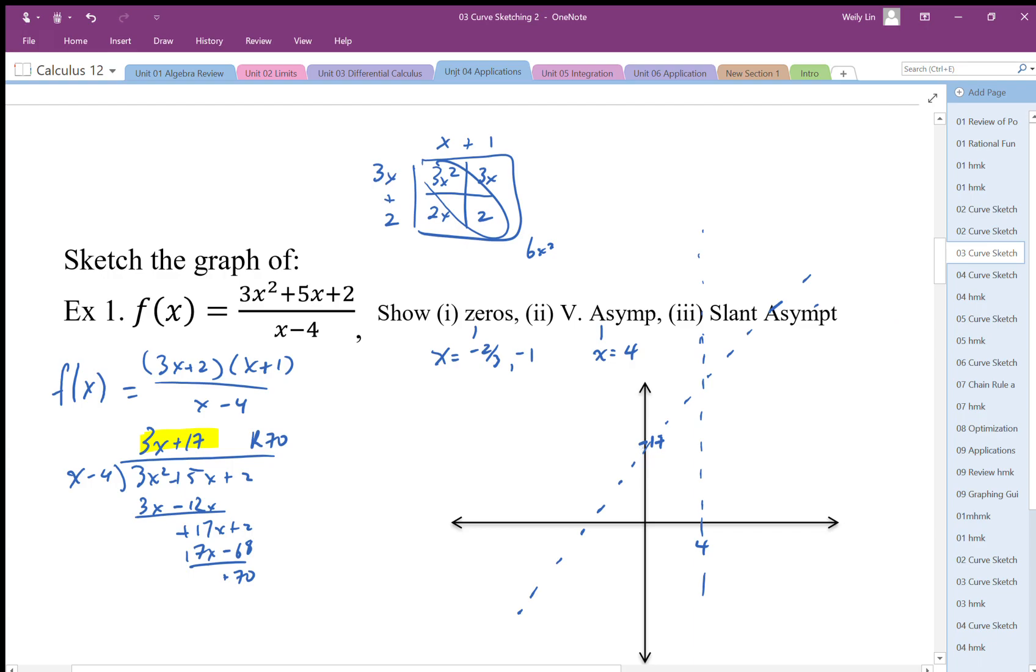I can also get the y-intercept of the graph. The y-intercept can be found by just plugging in. When x is 0, I get 0, 0, 2 divided by negative 4, or negative 1/2. So I have a vertical asymptote, my slant asymptote, and these three coordinates which I can put on my graph. Maybe I'll just put them in real quick.